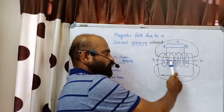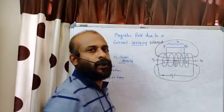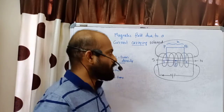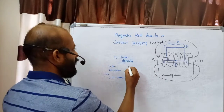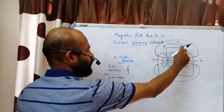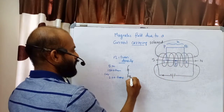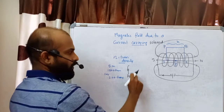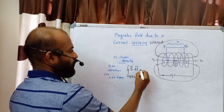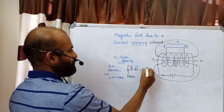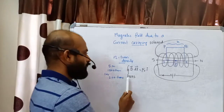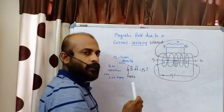We apply Ampere's circuit law: the line integral of the magnetic field along the closed path PQRS equals μ₀ times the current enclosed. We split the closed integral into four parts: from P to Q, Q to R, R to S, and S to P, all of B·dL, summed and set equal to μ₀ times the enclosed current.